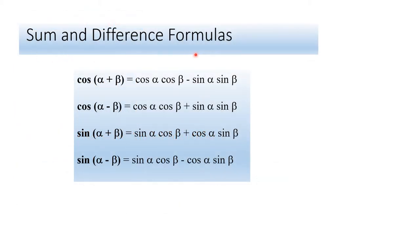Sum and difference formulas: cos(alpha plus beta) equals cos alpha cos beta minus sin alpha sin beta. Cos(alpha minus beta) equals cos alpha cos beta plus sin alpha sin beta. Sin(alpha plus beta) equals sin alpha cos beta plus cos alpha sin beta. Sin(alpha minus beta) equals sin alpha cos beta minus cos alpha sin beta.